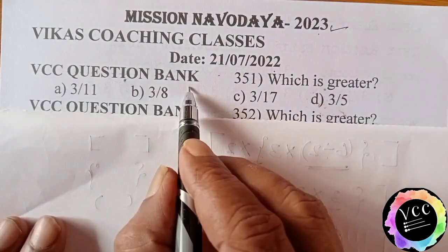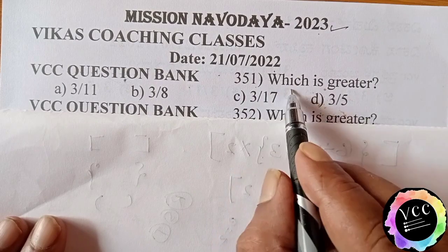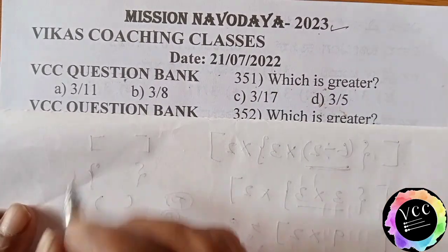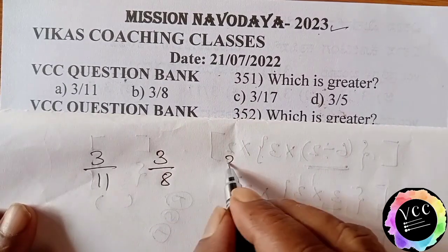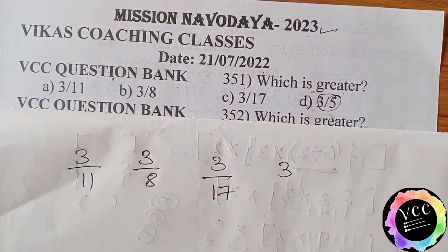VCC Question Bank 351. Which is greater? A: 3 by 11. B: 3 by 8. C: 3 by 70. D: 3 by 5.